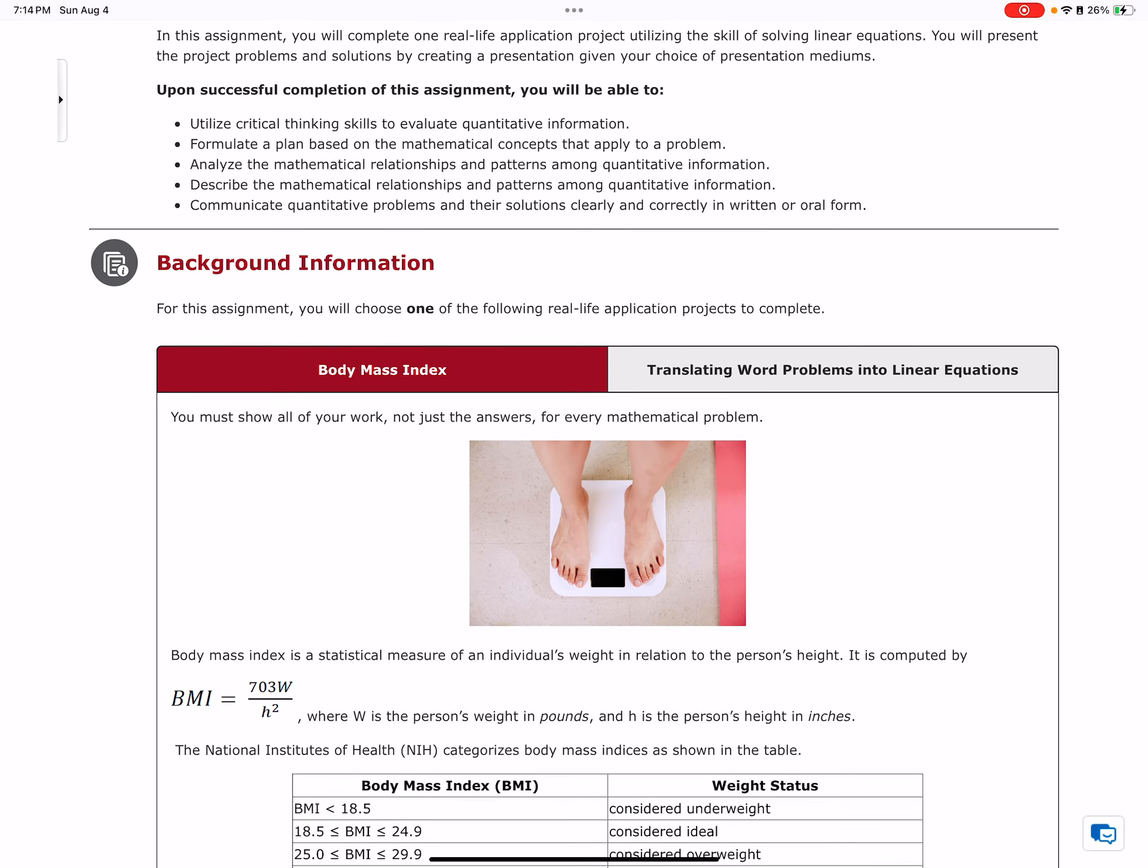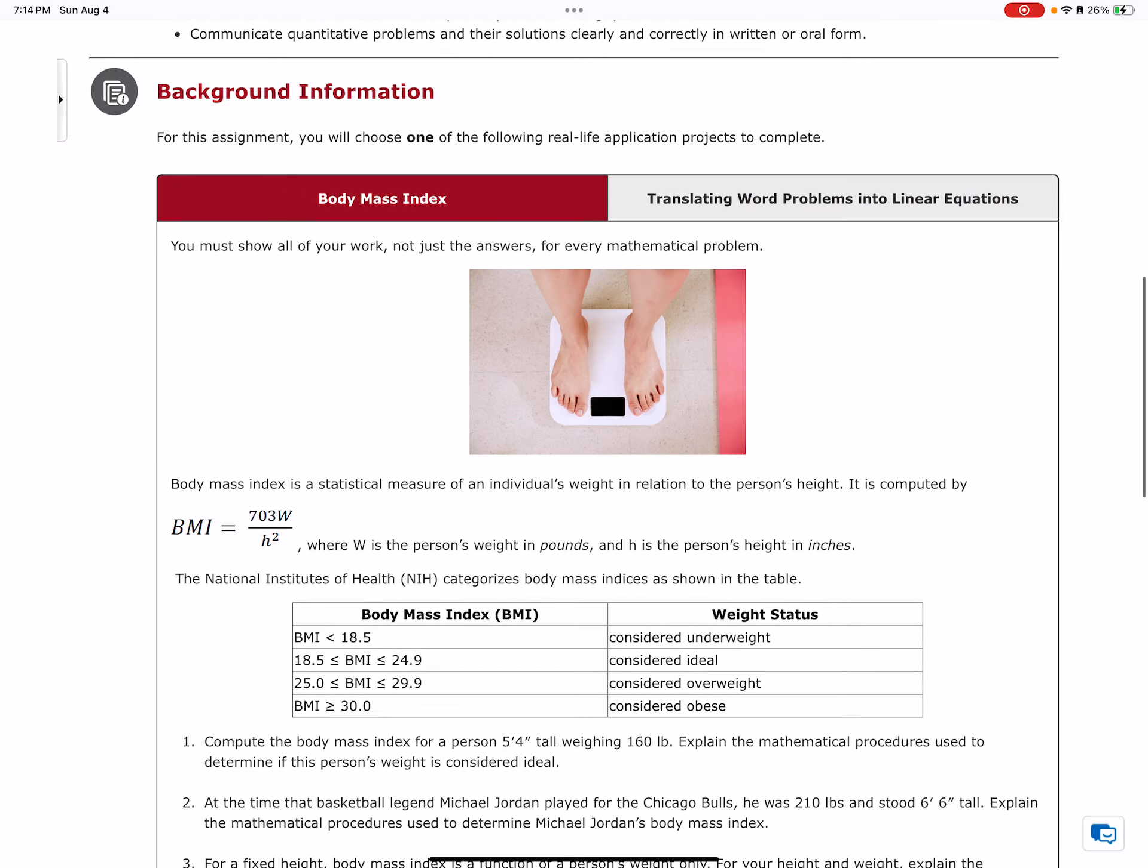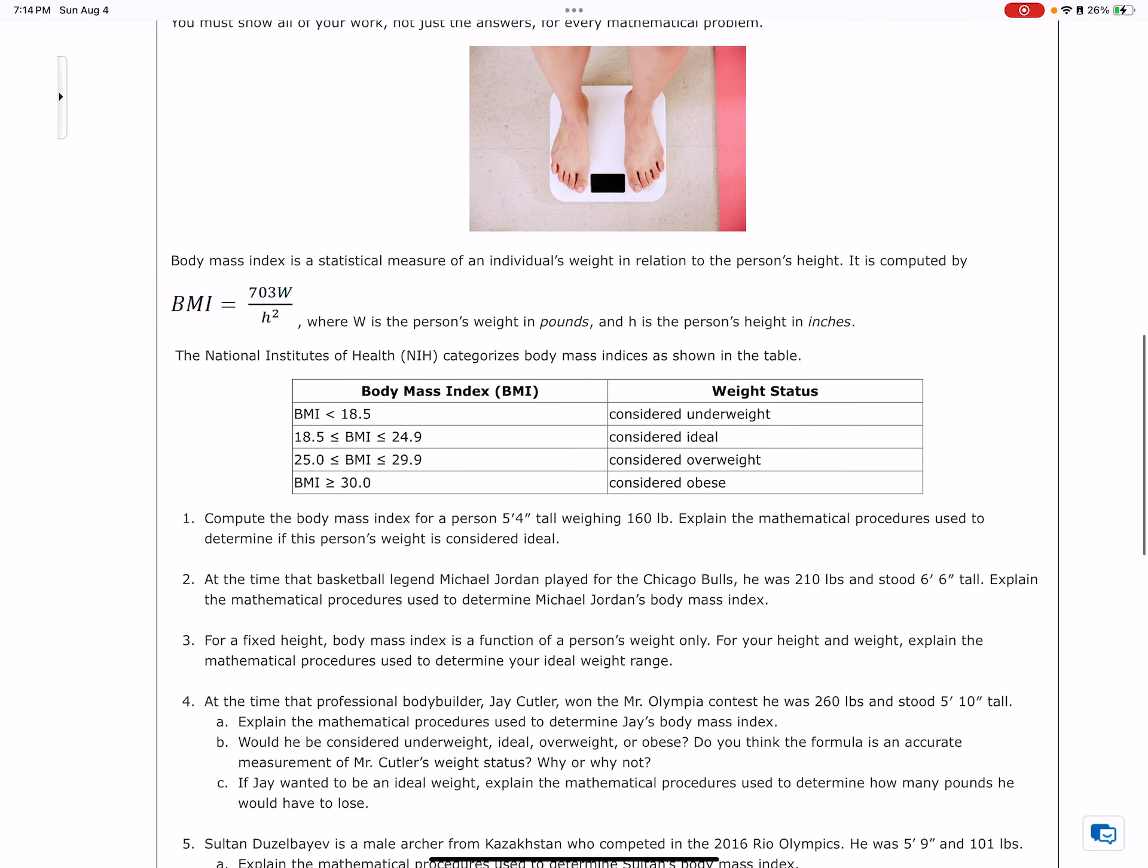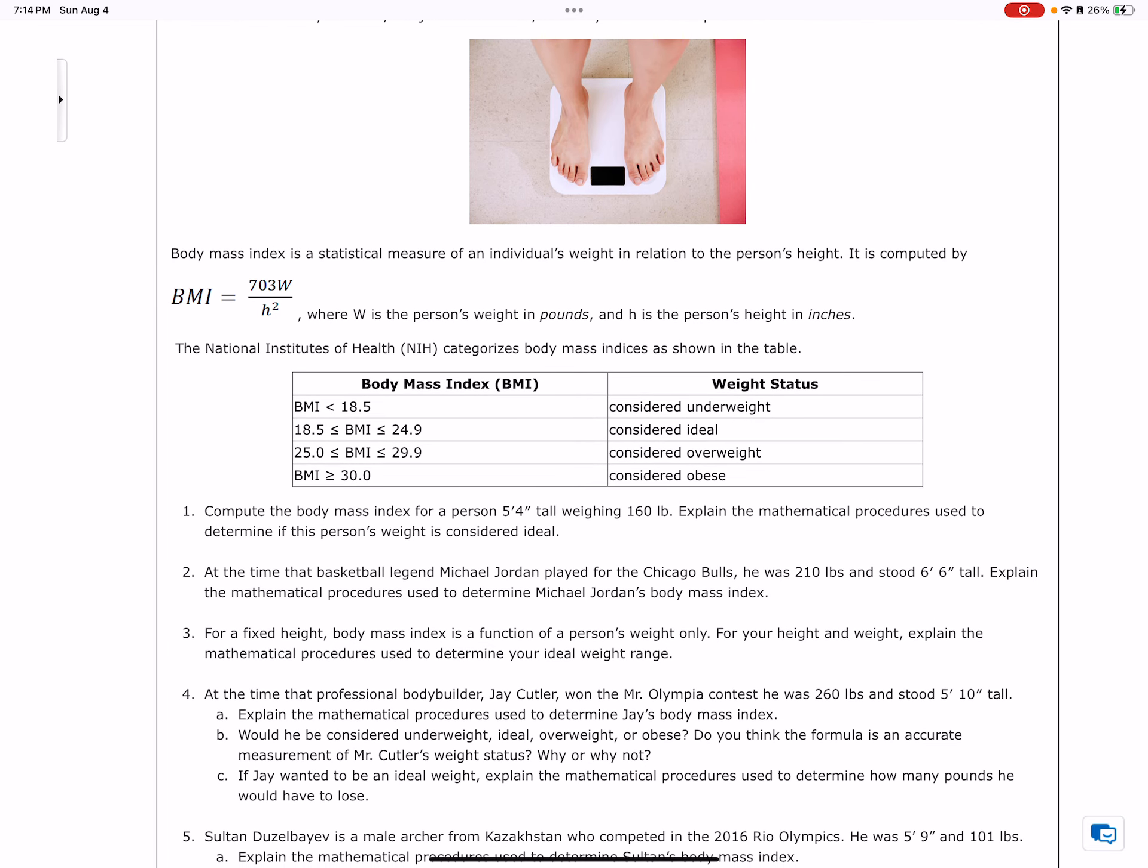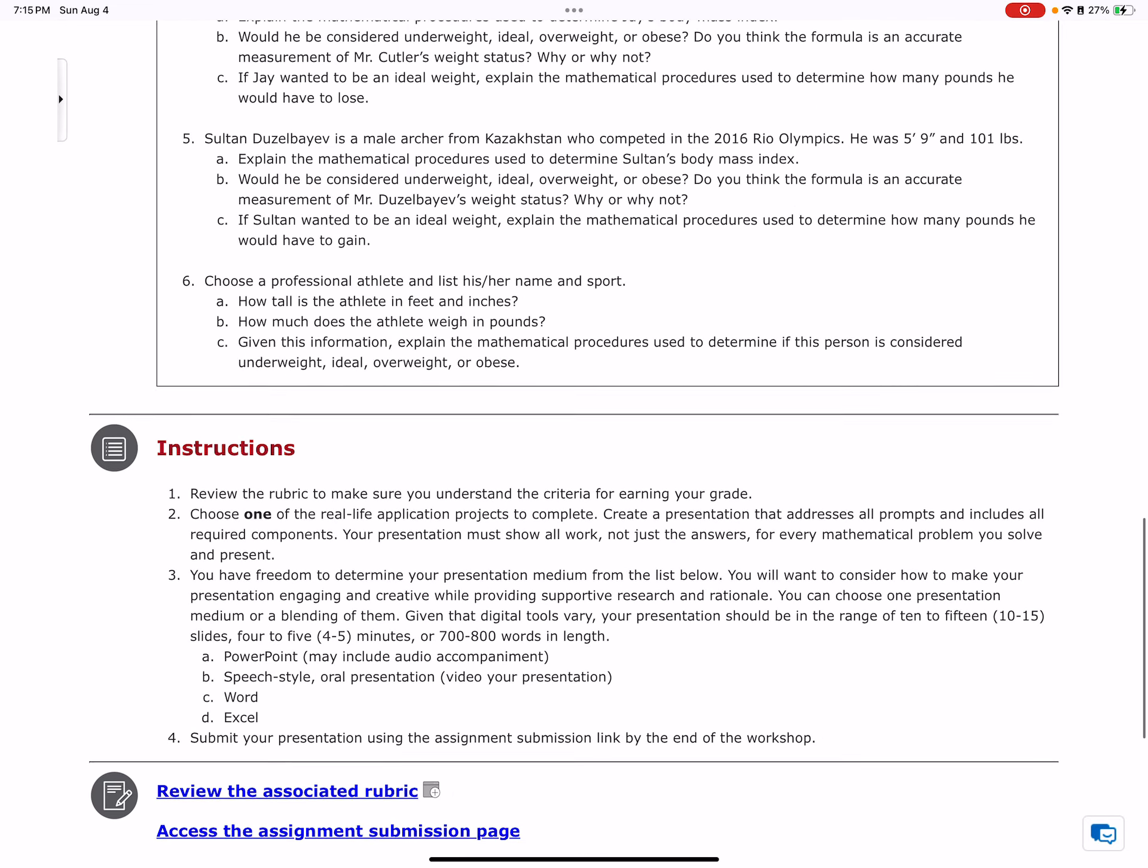The last step is, why do I need to know this? Real life application. There's body mass index or translating word problems to a linear equation. If you choose body mass index, you're going to compute the body mass index for somebody that's 5 feet 4 inches tall and weighs 160 pounds. You'll use this equation: 703 times their weight divided by their height squared. Remember the height is in inches, so you need to convert that first.